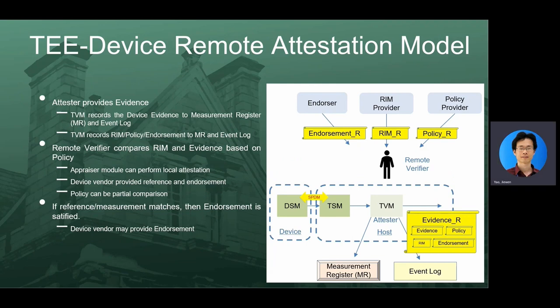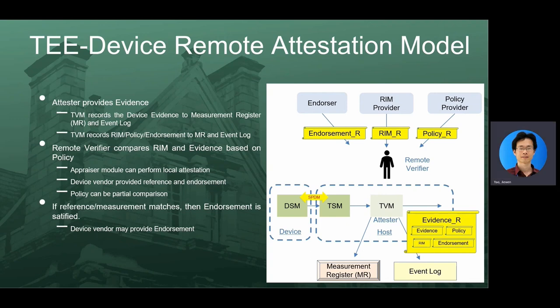Besides local attestation, the TVM may support remote attestation for the device. In this case, the verifier is remote. The TVM needs to record all data — such as device evidence, verification policy, RIM, and endorsement — to the TVM measurement register and event log. Then the TVM presents that information to a remote verifier. The remote verifier may use its own endorsement, RIM, and policy to verify if the TVM is trusted. Items are marked with underscore R to indicate data for remote verification, different from what is used in local verification.